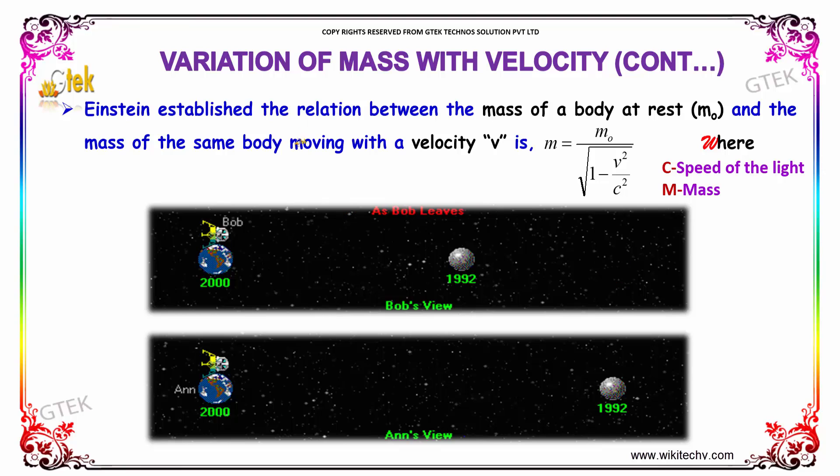Einstein established the relationship between the mass of a body at rest, M₀, and the mass of the same body moving with velocity V. It is given by M = M₀ / √(1 - V²/C²).